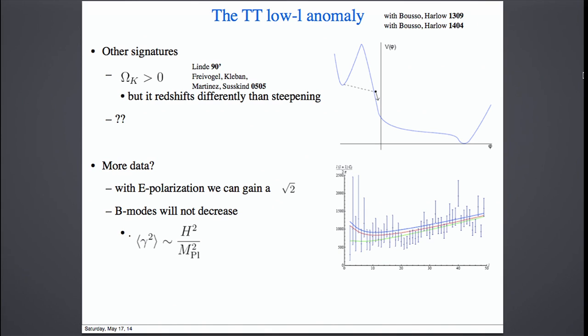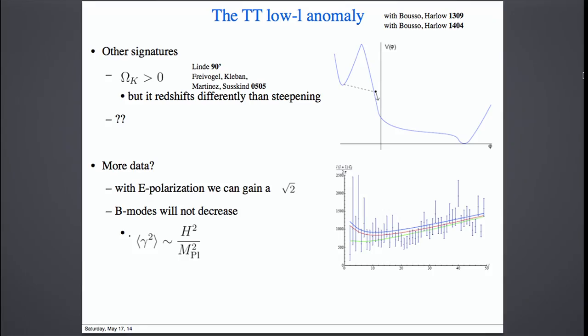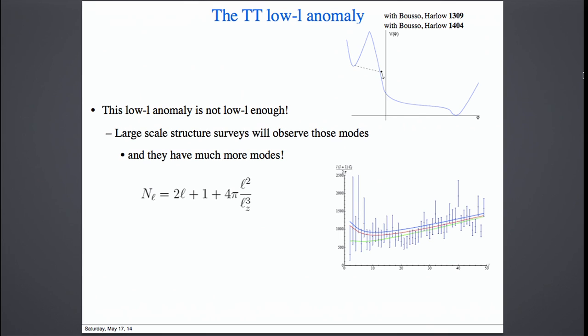It's a bit uncertain why the steepening should appear more or less on the larger scales that we observe — there is no compelling theory for this. But I will simply take the point of view that if we see it, we need to explain it. And now it's 3-4 sigma. The most important thing is that new data will come. The E-polarization data will gain a factor of square root of 2. B-modes will not decrease. And there is a very important new signal that was never pointed out before — this low-L anomaly is not low-L enough. It's about L equals 30 or so.